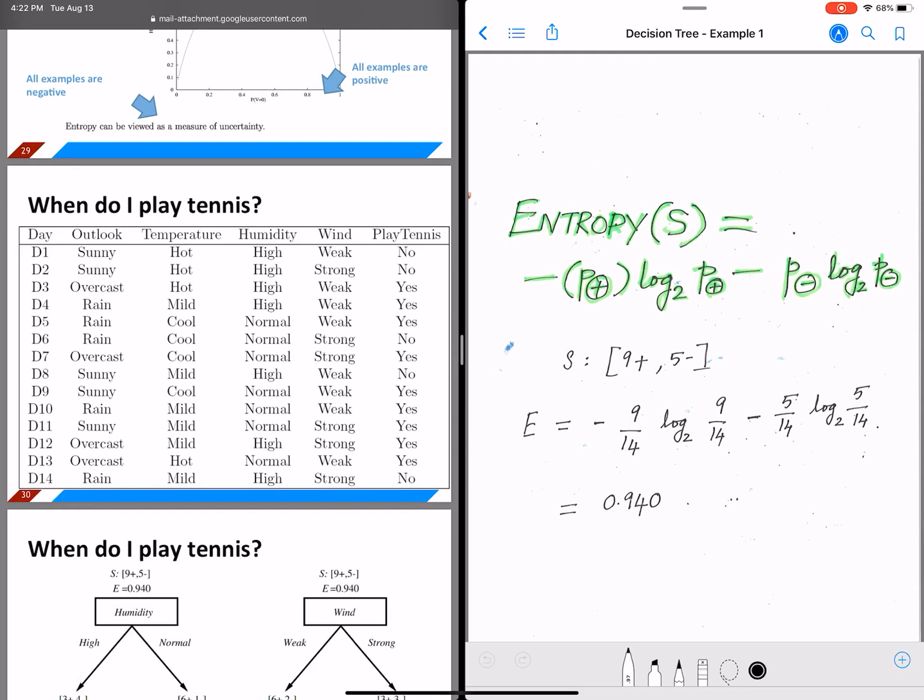Let's understand entropy in the context of a more complex example and see how that is used in the decision tree for calculating information gain.